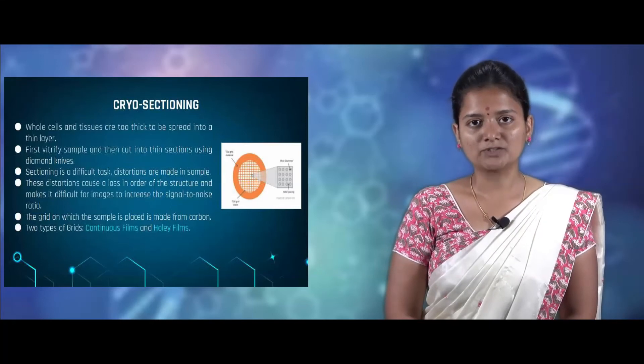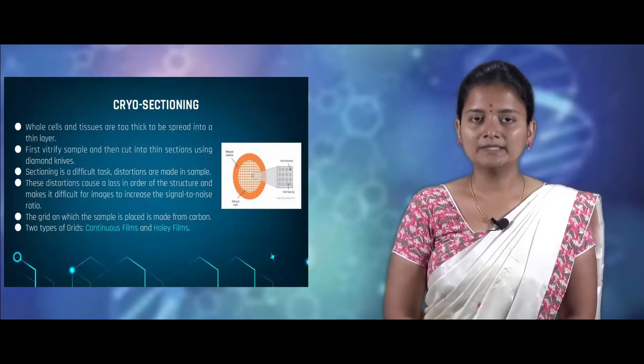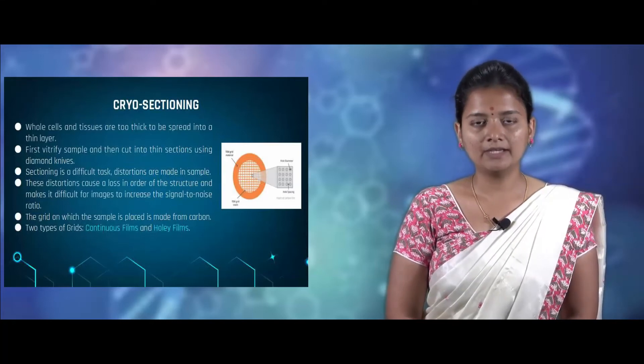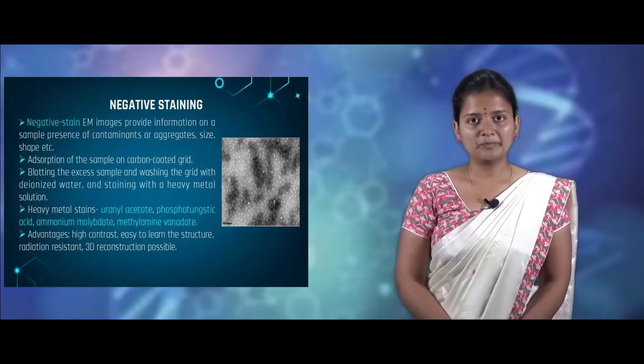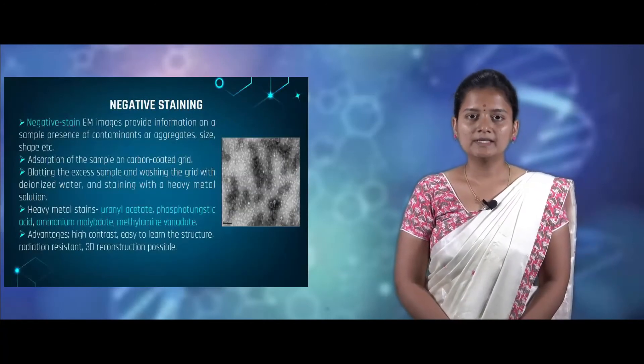The mostly used grids for cryo electron microscopy are carbon grids. There are two main types of grids: continuous films and holey films.